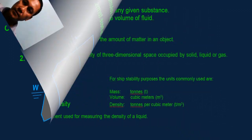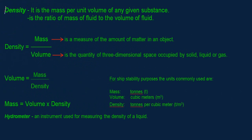Density is the mass per unit volume of any given substance. It is the ratio of the mass of fluid to the volume of fluid. Mathematically, density equals mass over volume. Mass is the measure of the amount of matter in an object, so it refers to weight.